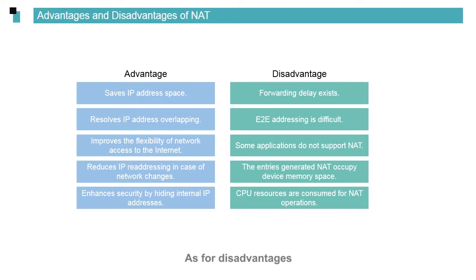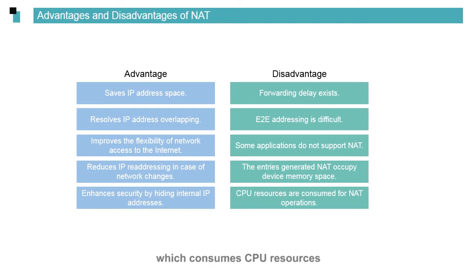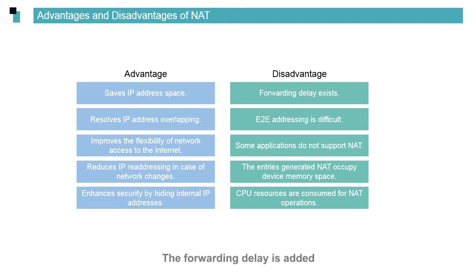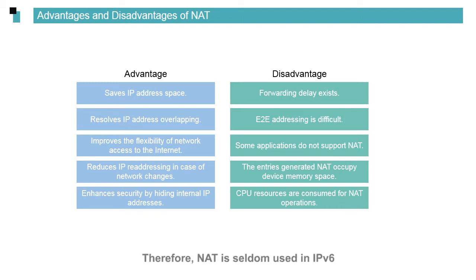As for disadvantages, the fields of each packet need to be rewritten on the NAT device, which consumes CPU resources. The storage of NAT entries consumes dynamic storage space. Forwarding delay is added and end-to-end navigation capability is lost. Therefore, NAT is seldom used in IPv6. Also, some applications do not support NAT, such as IPsec VPN.